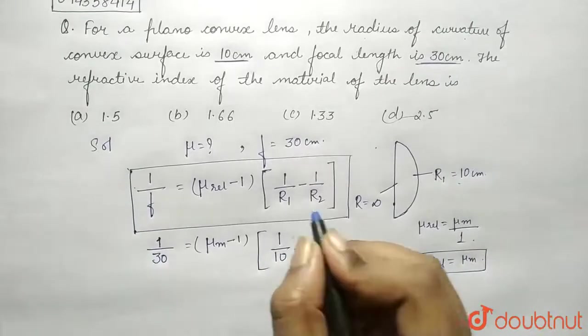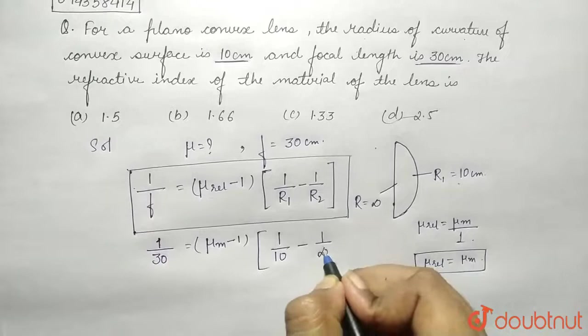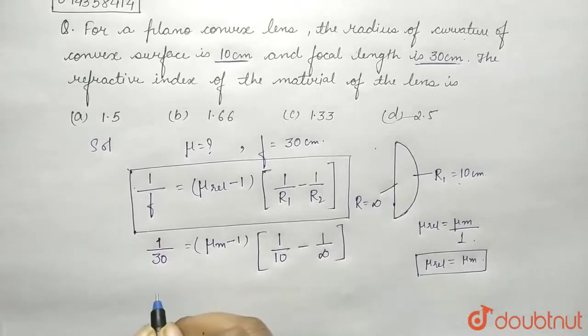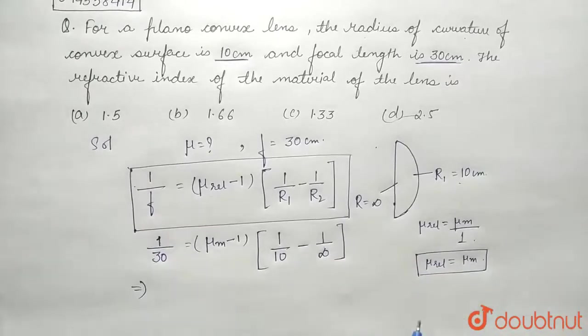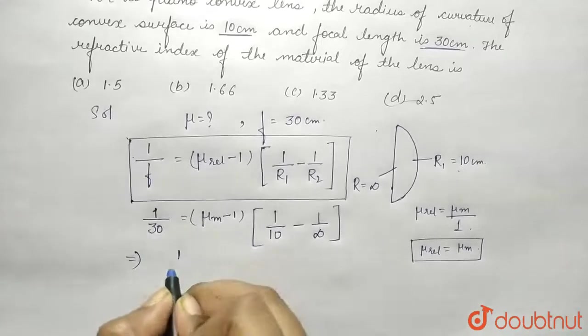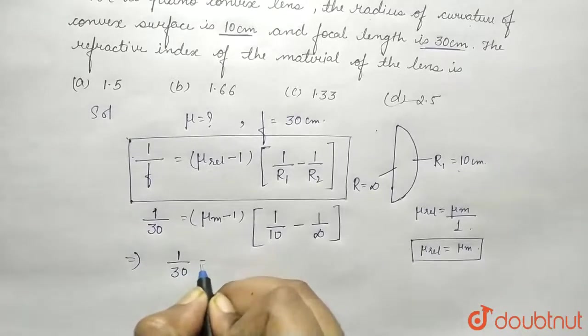r2 is infinity, one upon infinity. So we'll get this as 1/30 equals to (μ_m - 1) into 1/10.